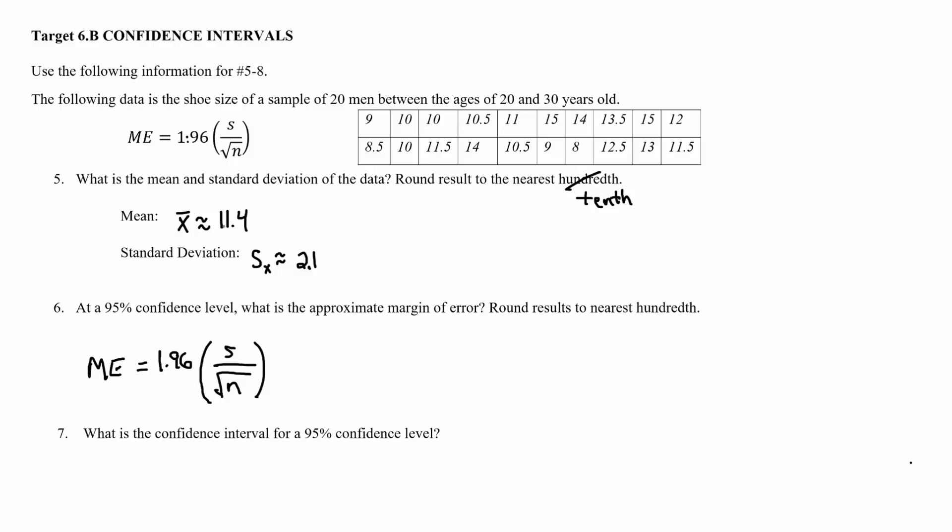So X bar is going to be about 11.4 and standard deviation is going to be about 2.1. It says round to the nearest hundredths but let's just go with the tenths for now.